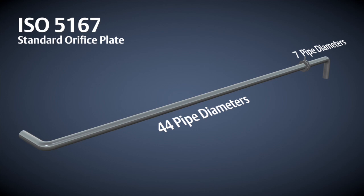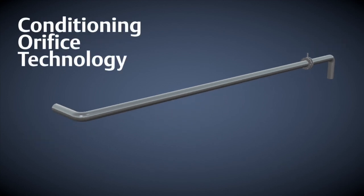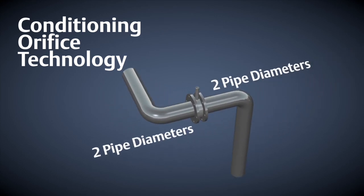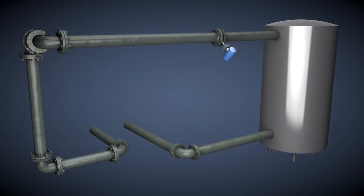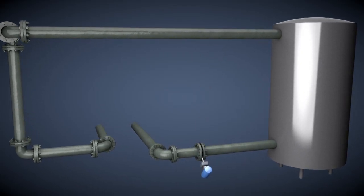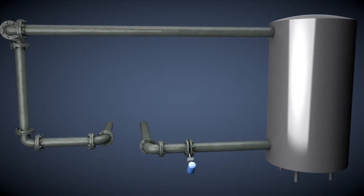For the same upstream disturbance, conditioning orifice technology only requires 2 diameters upstream and 2 diameters downstream. Additionally, conditioning orifice technology allows for installation to occur at locations where standard orifice plates could not measure accurately.